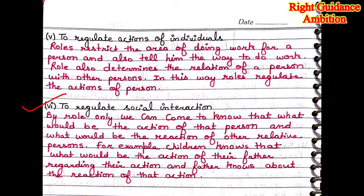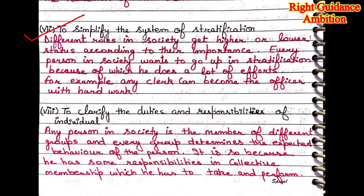The seventh point is: to simplify the system of stratification. Different roles in society get higher or lower status according to their importance. Every person in society wants to go up in stratification and tries to play that role which gives more respect than lower roles. We try to achieve higher roles in society, because of which we do a lot of hard work and effort. For example, any clerk can become an officer with hard work. If a person is playing a lower role, they can go towards higher stratification.